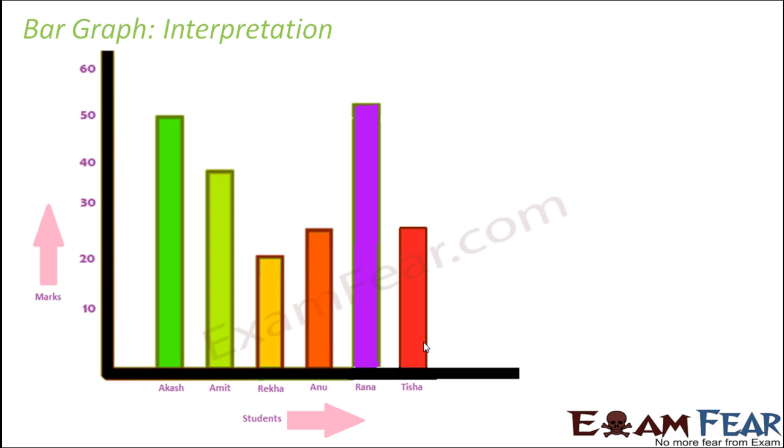Now let us see what information can be extracted from this bar graph or how we interpret it. Who has the highest score? The one with the tallest bar, which is Rana. Who has the lowest score? The one with the shortest bar, which is Rekha. If you have a bar graph showing one student's performance in different semesters, you can compare the performance looking at the height of the bars. The bar graphs are self-explanatory. Just looking at the bar graph, you can infer a lot of information.